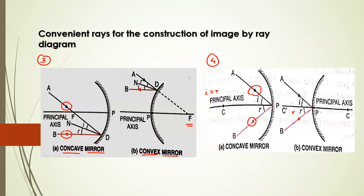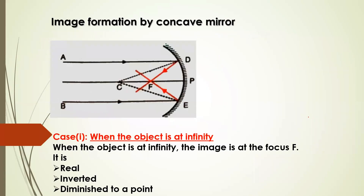Now we can go to the actual image formation diagrams. First we will see the concave mirror image formations. To draw the diagram, start with the concave mirror, draw the principal axis, then show the pole of the mirror, the focus of the mirror, and the center of curvature.